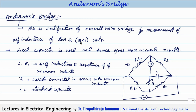The major advantage of Anderson bridge is that in Maxwell's Wien bridge we need a variable capacitor, which is very costly and not so accurate. That problem is avoided here because we use only a fixed capacitor, and hence it gives more accurate results compared to Maxwell's Wien bridge.